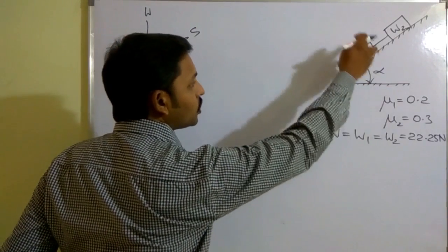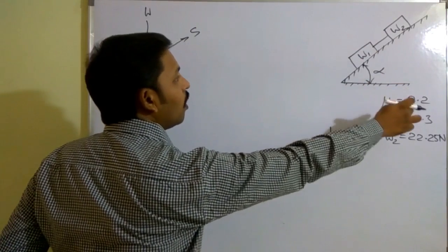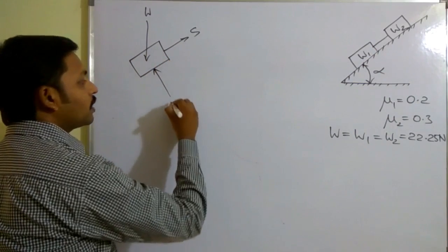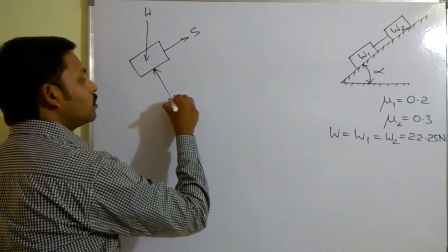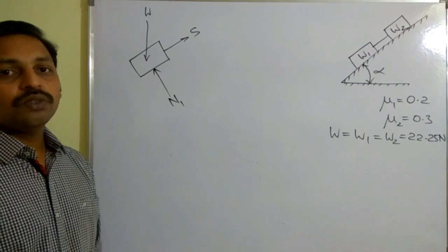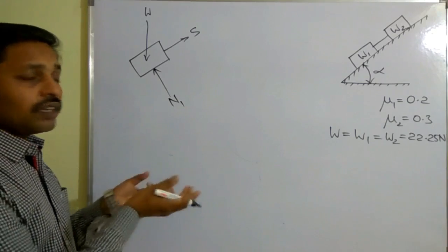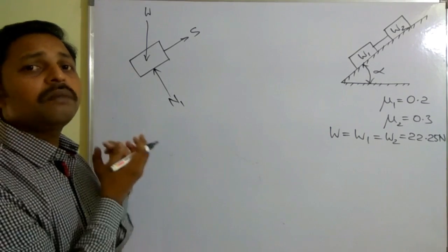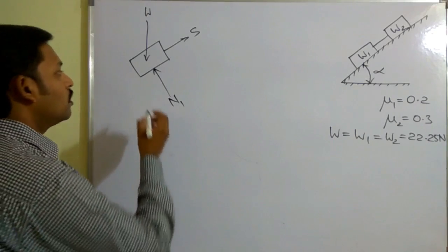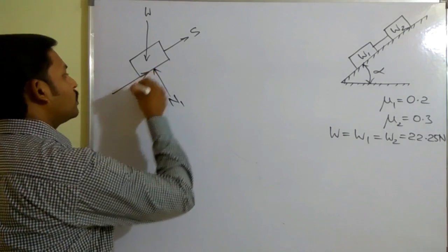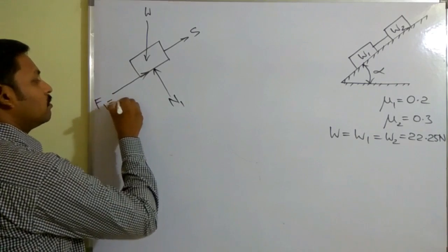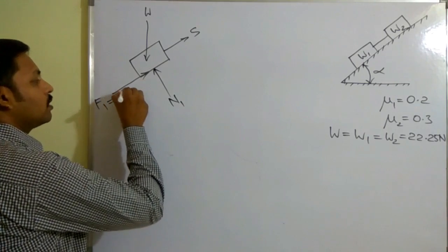This block is not able to move perpendicular to the surface, so in the direction perpendicular to the surface we represent the normal reaction N1. Since this block will have impending motion down the plane, in the opposite direction we represent the frictional force f1, which is equal to mu1 times N1.